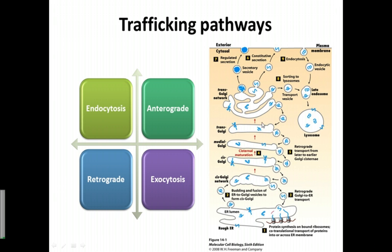For example, regulated secretion includes testosterone, estrogen, LH, enzymes, and hormones. This picture summarizes the entire trafficking pathways. The movement from your ER to the plasma membrane is called anterograde. The movement from your plasma membrane to inside the cell is called retrograde movement.